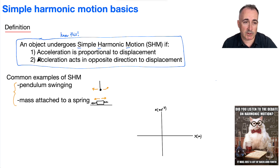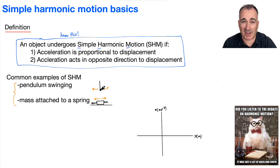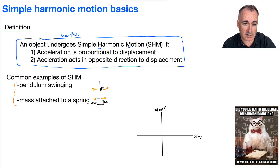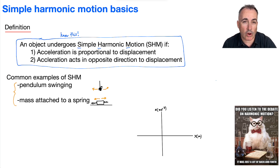So what do we mean by these two things? First, the acceleration acts in the opposite direction to the displacement. That means if I take my pendulum and displace it to the right, there's going to be an acceleration to the left. What causes an acceleration? An unbalanced force — a restoring force. In this case it's due to gravity; there's a component of gravity making it go to the left. So if you displace it to the right, the force goes to the left, and if you displace it to the left, the acceleration is to the right. So it's always opposite.